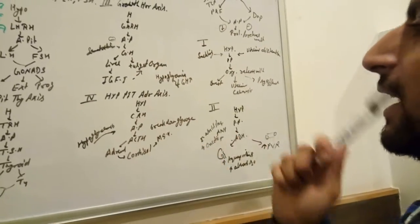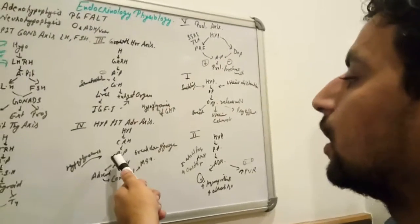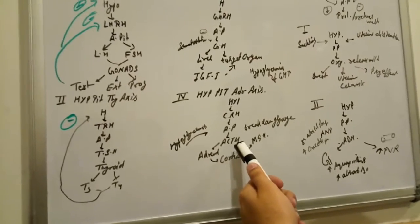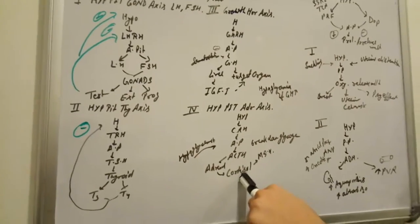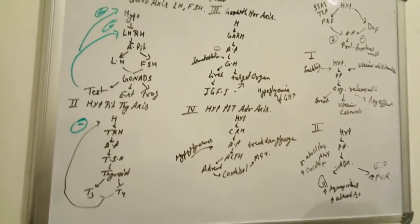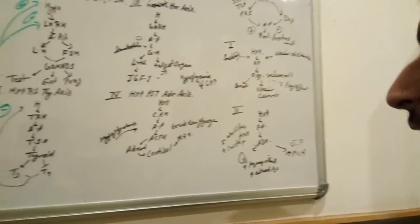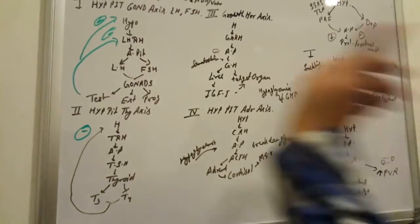The hypothalamus-pituitary-adrenal axis: Hypothalamus releases corticotropic releasing hormone, which goes to the anterior pituitary. The anterior pituitary secretes ACTH — adrenocorticotropic hormone — which acts on the adrenal gland. The adrenal secretes cortisol, and cortisol also drives secretion of MSH, melanocyte stimulating hormone. This is a cycle you have to learn. We will also discuss pathologies related to this, like Addison's disease, in another topic.